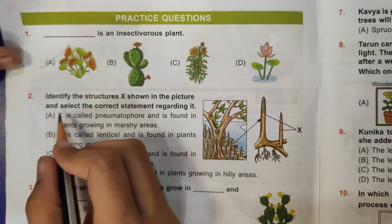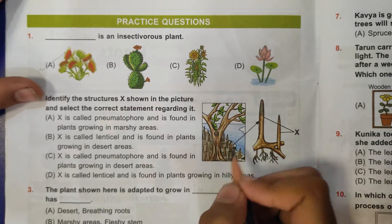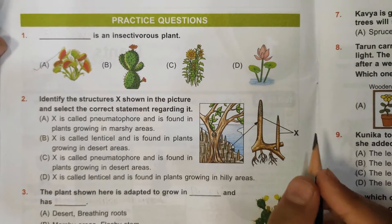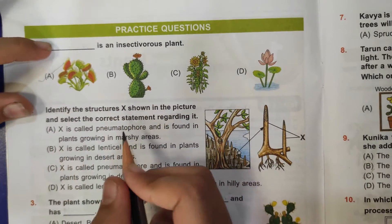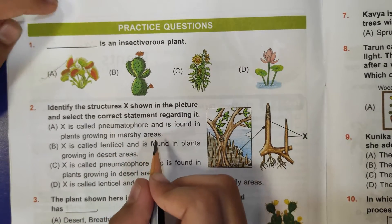This is a mangrove plant and this is the root of the mangrove plant. So here is X. X is called pneumatophore and is found in plants growing in marshy areas. So that's a true statement, so A is the correct answer.